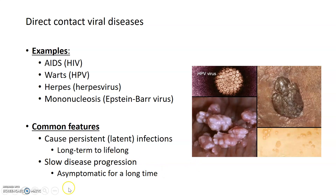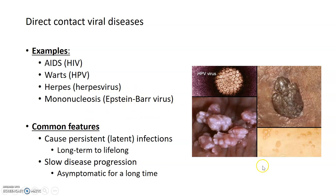One advantage to this slow disease progression and persistent infection is that, as a virus that must be transmitted by direct contact, your rate of transmission is probably pretty low. By staying infective inside the host for a long time and allowing the host to live while remaining infected, the virus increases its chances of being passed on to a new host. Examples of direct contact viral diseases include AIDS, genital warts, herpes, and mononucleosis. The warts, visible in the image on the right, are caused by HPV or human papillomavirus.